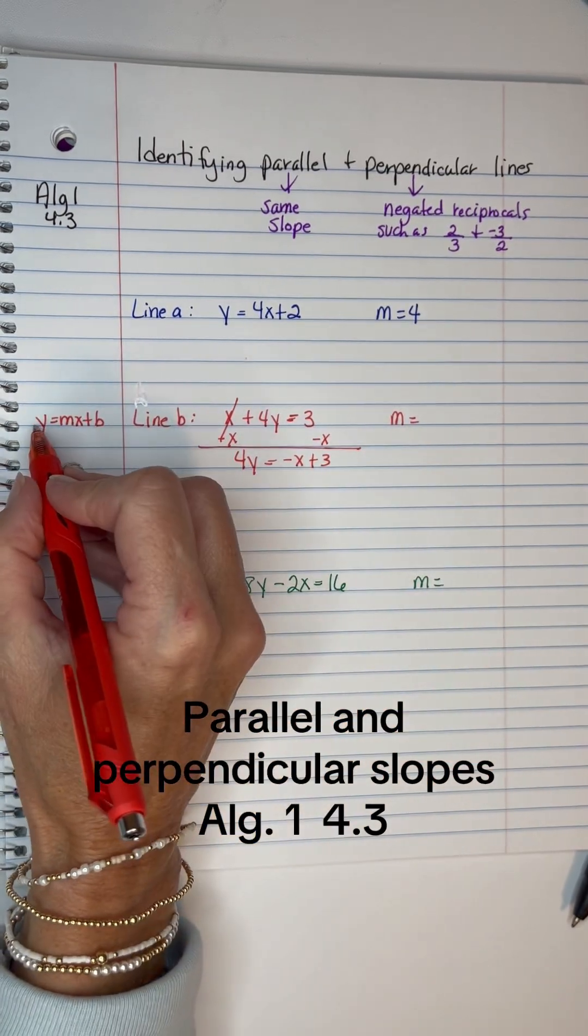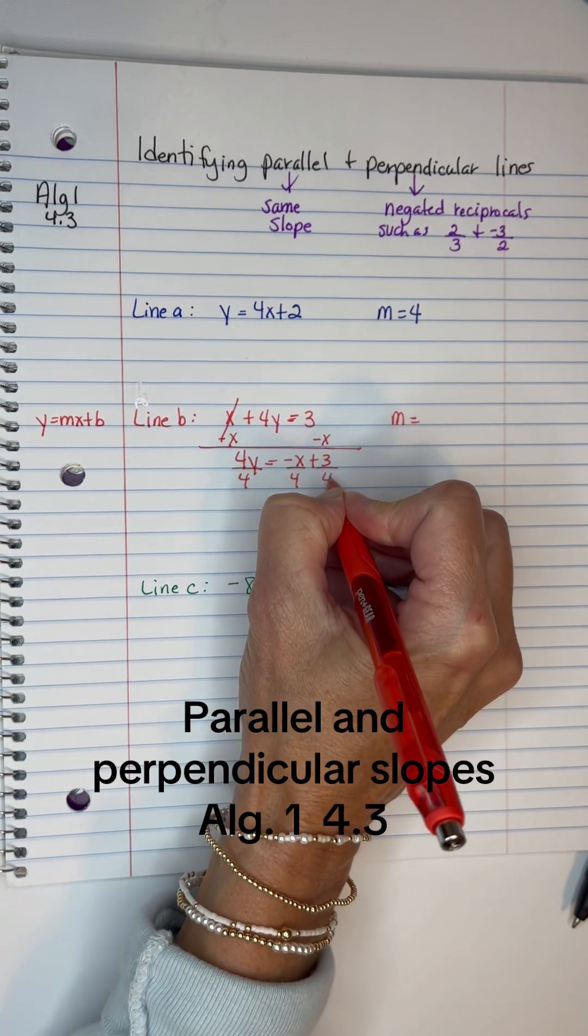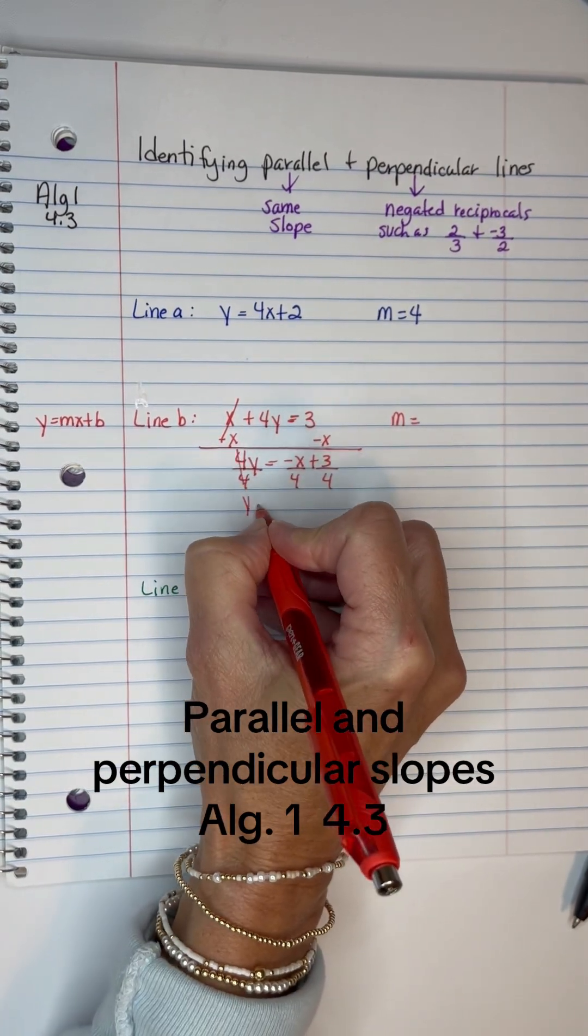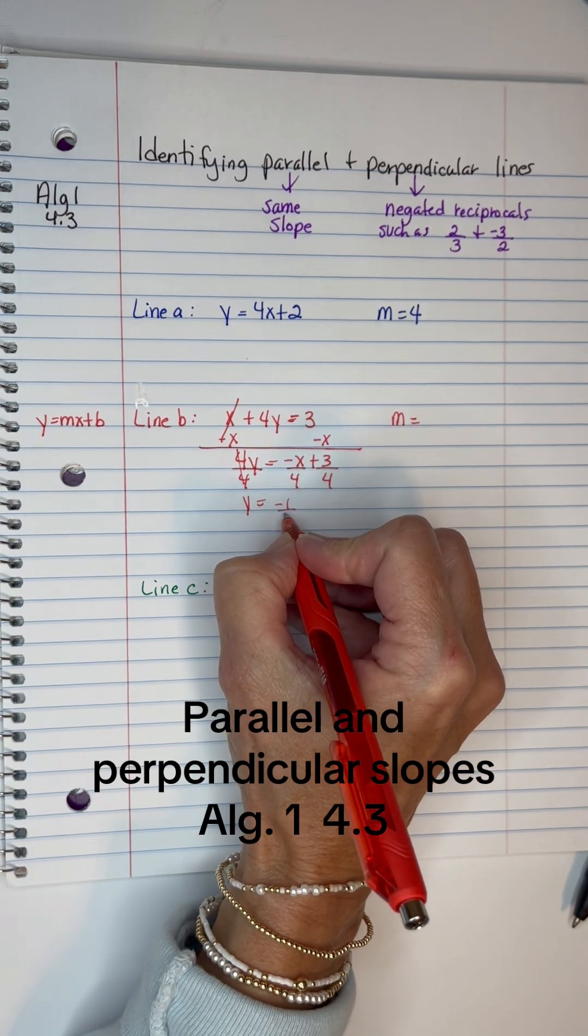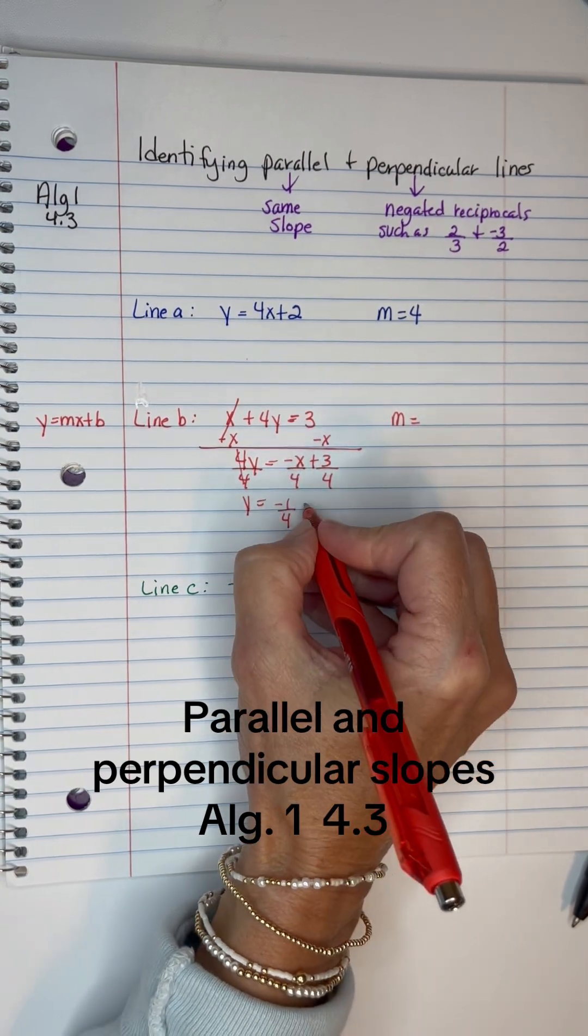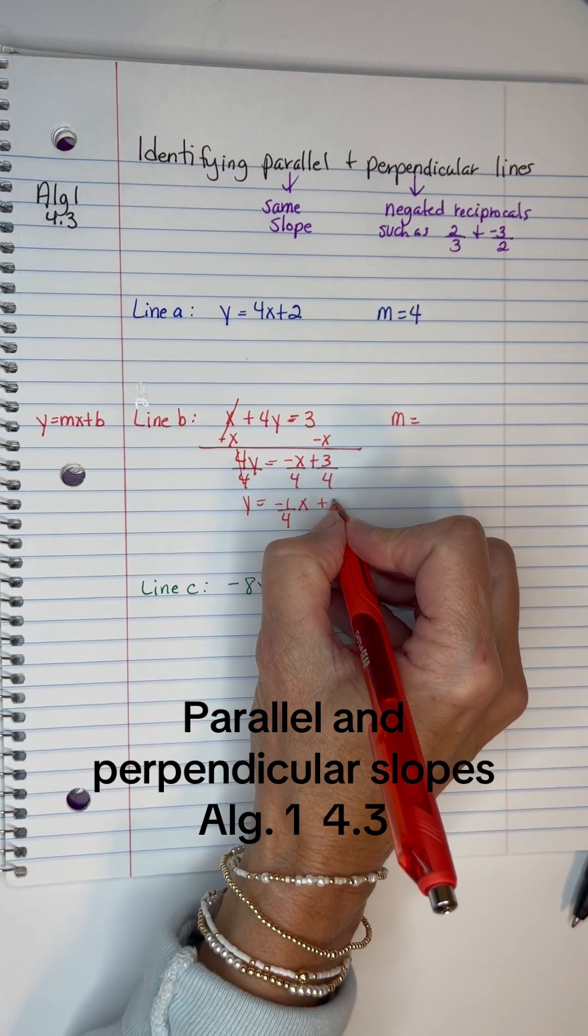And then to get the y alone away from the 4, we'll divide every term by 4. So y equals, you can turn this into a fraction -1/4. It's invisible 1 in front of the x. -1/4 x + 3/4.